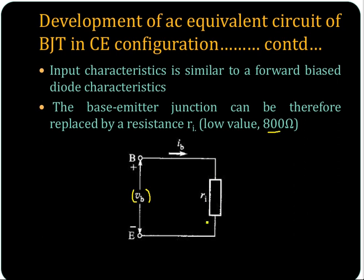And RI is the input resistance. So the base emitter junction is replaced using this, and this is the equivalent circuit for the input side.